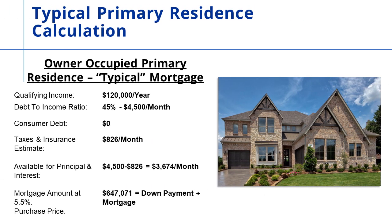Let's look at a typical owner-occupied mortgage example. This person makes $4,500 a month, has paid off their debts, and has no car payments. We'll assume taxes and insurance of $826 a month. Subtracting $826 from $4,500 means they can spend $3,674 a month for principal and interest. At 5.5%, that yields a loan amount of $647,071. Add your down payment to that and that's your purchase price.